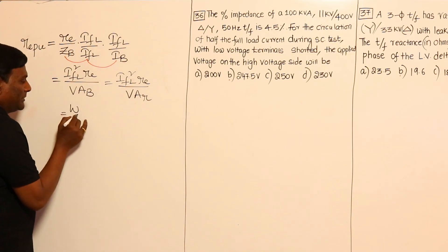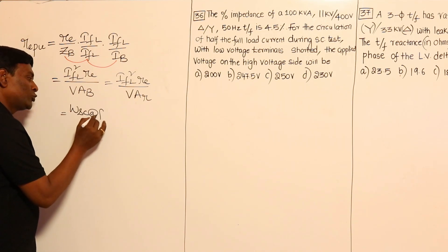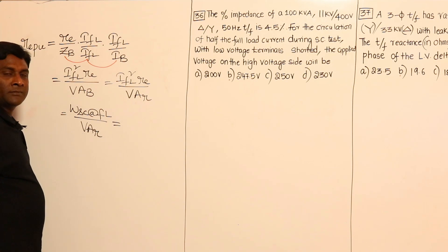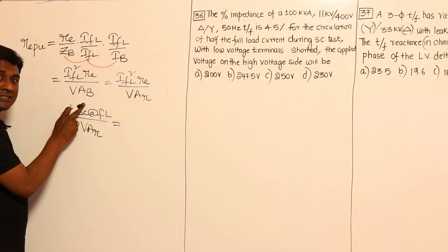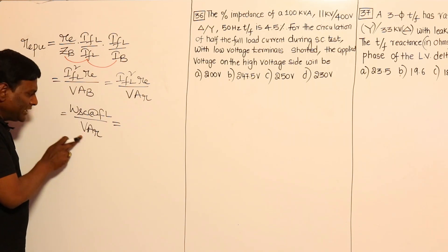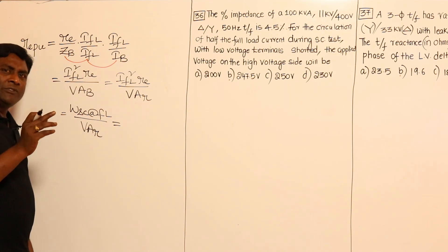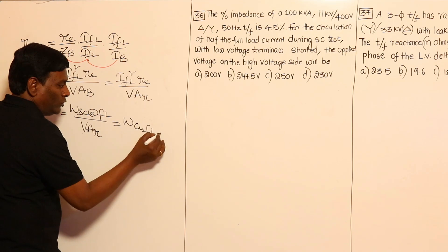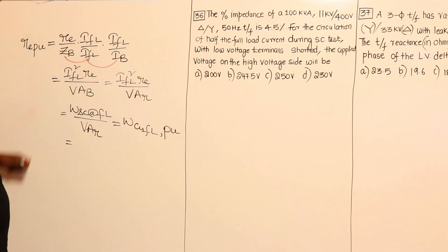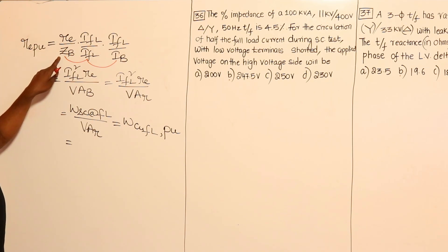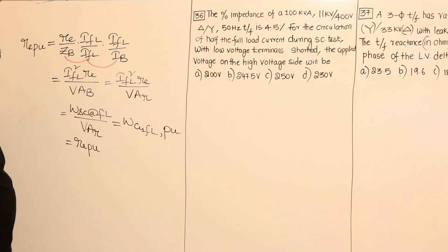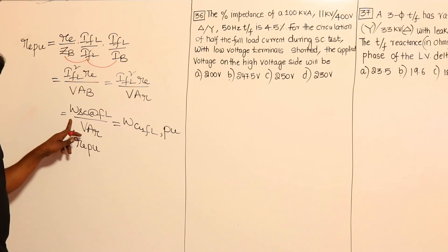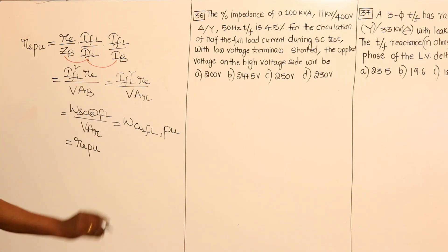So this is going to be watt meter reading at short circuit conditions — but the test should be conducted at full load — divided by VA_rated. This means full load copper losses divided by VA_base. Copper losses are in watts; the actual value in watts divided by the base also in watts gives us full load copper losses in per unit. And Re per unit equals Re divided by Z_base. Therefore, Re per unit and full load copper losses in per unit are the same.